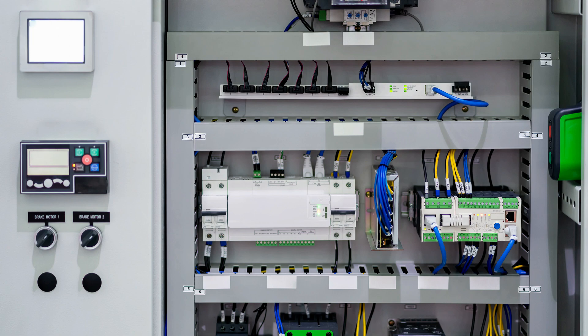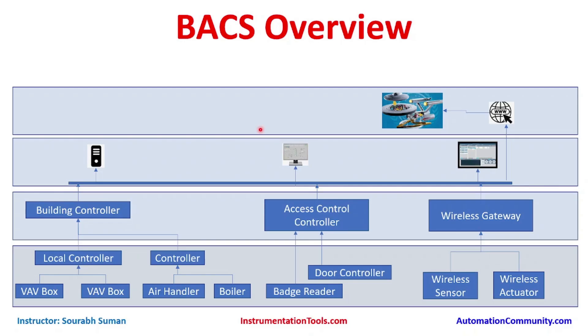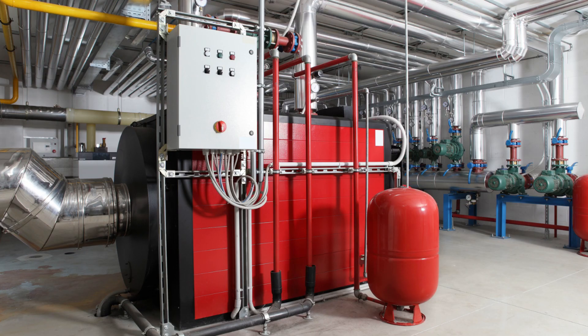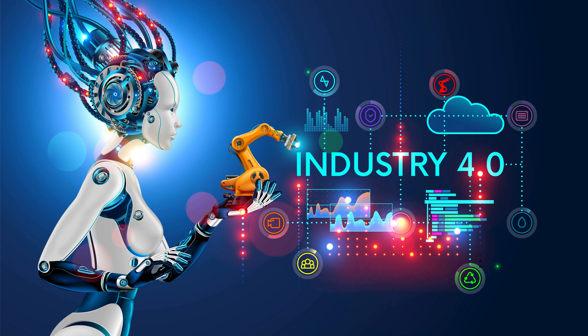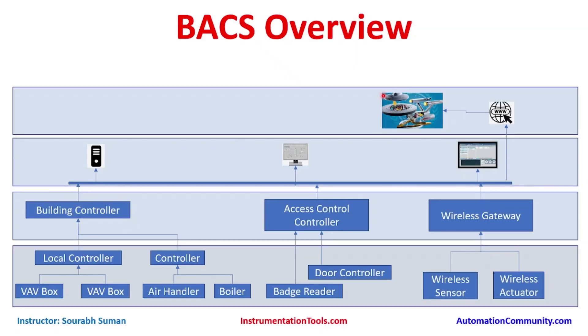BACS are also used for fire, electrical, lighting, physical access controls, physical security, and other utility systems. Most modern buildings contain some form of building automation system — it could be on a smaller scale or on a larger scale, depending on the building architecture and the type of automation implemented.